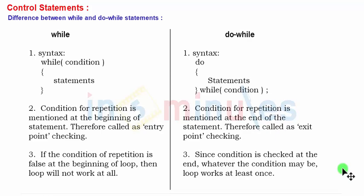First is the syntax. In case of while statement, we write syntax as while in bracket condition, then statements in curly brackets. In case of do-while, we write do, then curly brackets with some group of statements, and then we write while with semicolon. So there is one difference, that is syntax difference.